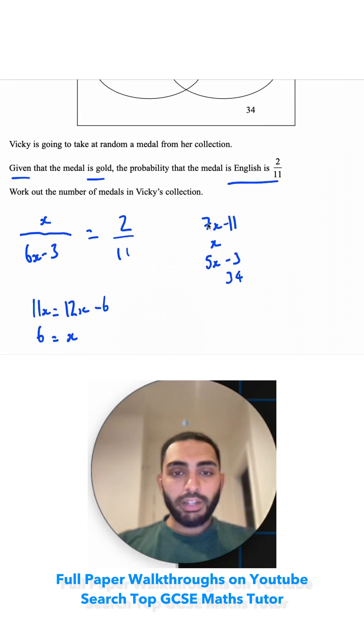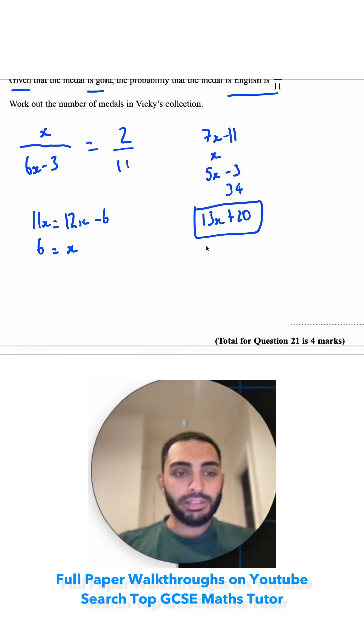So 7x, add x, add 5x. That's 8x plus 5x, which is 13x. Negative 11 minus 3, that's minus 14. Add 34, which would be plus 20. So this is an expression for the total number of medals. And we know what x is. x is 6. So we're going to do 13 multiply by 6 plus 20. That'd be 60 plus 18. So 78 plus 20, which is equal to 98.